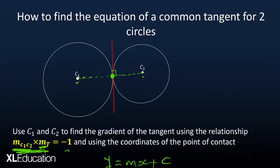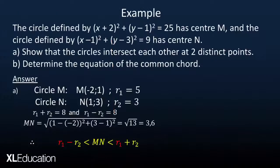Now we want to look at one example applying all these concepts. We have the circle defined by (x + 2)² + (y - 1)² = 25 with center M, and the circle defined by (x - 1)² + (y - 3)² = 9 with center N. The first question asks us to show that the circles intersect each other at two distinct points.